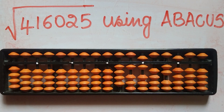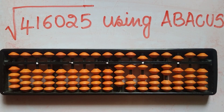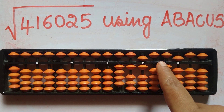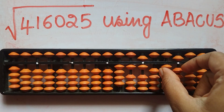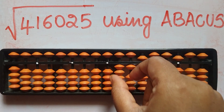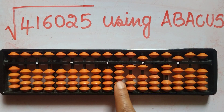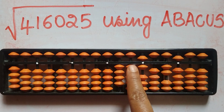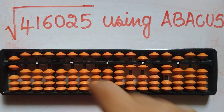The first step is to find the nearest perfect square, just like we do in the long division method. You make pairs of two digits — here the first pair is 41. The nearest perfect square of 41 is 36, which is 6 squared, so we take 6.